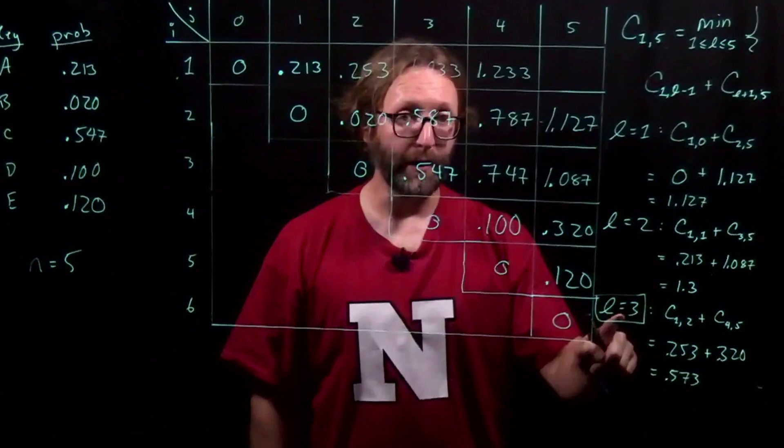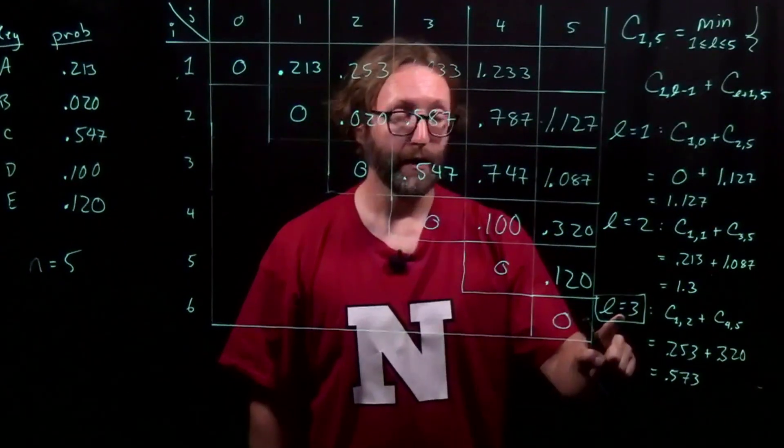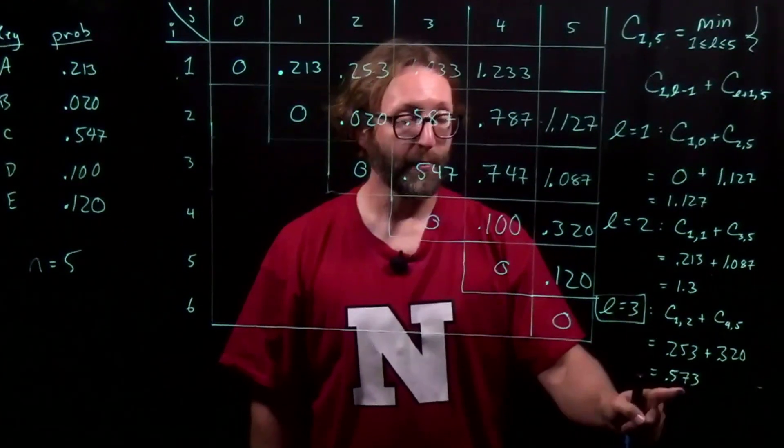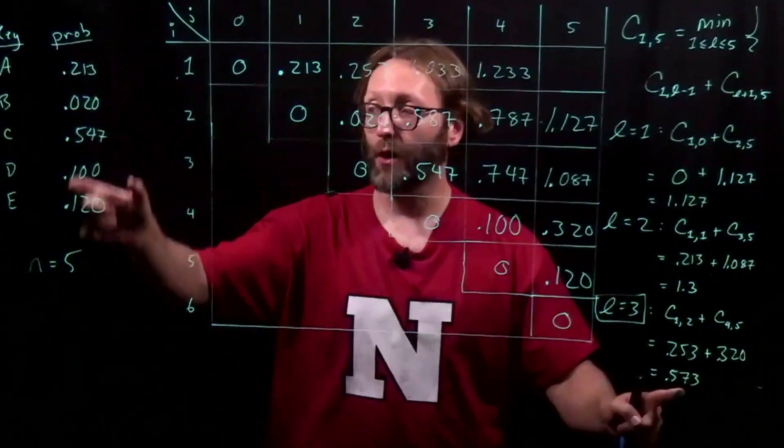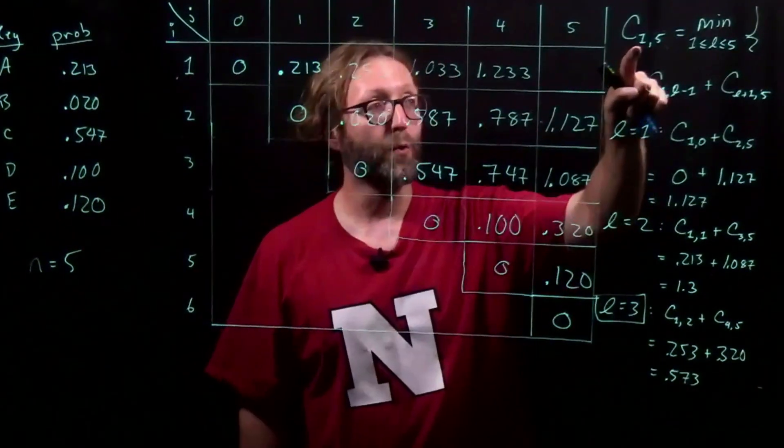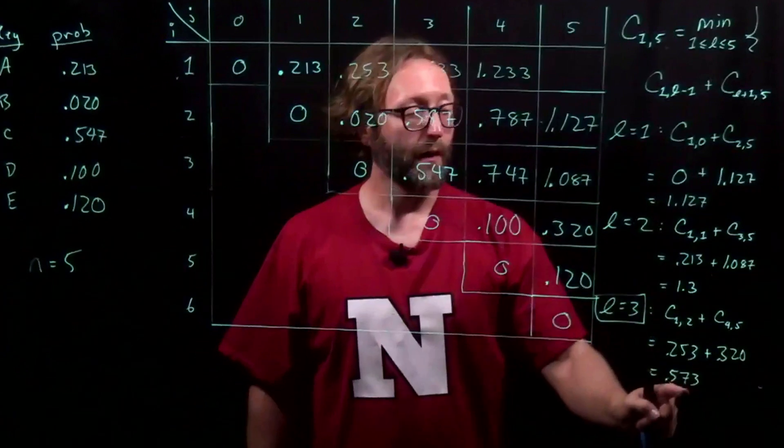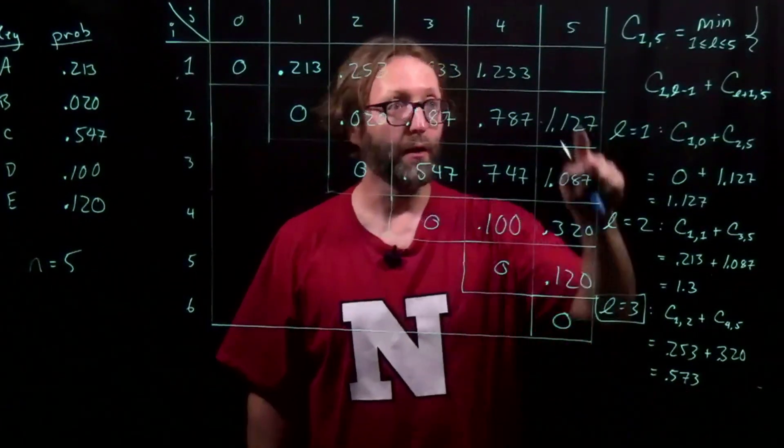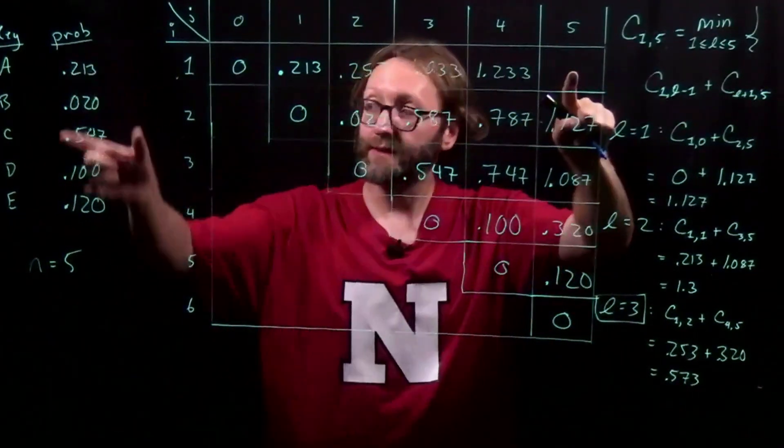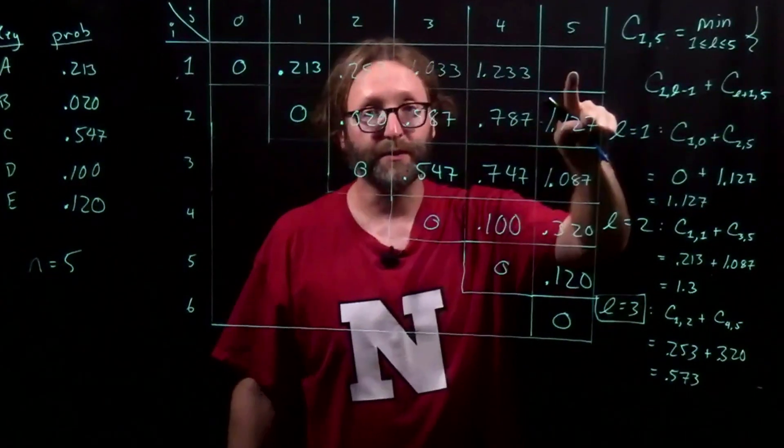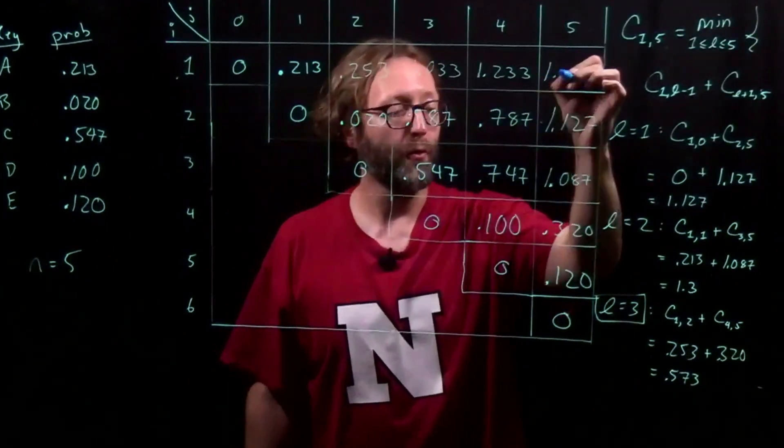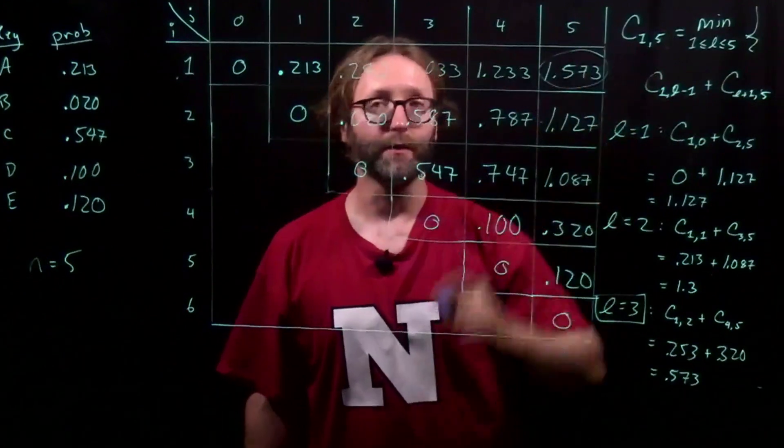So we would record 3 as our root value in our root table, and we would put this plus the probability of all these keys over here, because we're considering keys 1 through 5, and this value in our final value over here. Since this is a probability distribution, it simply sums to 1, and I have 1.573 as my final answer.